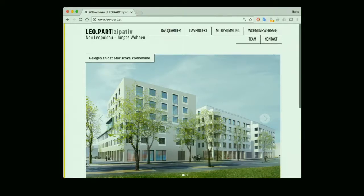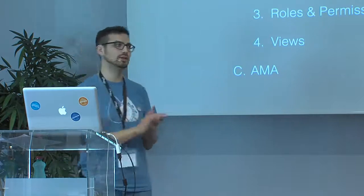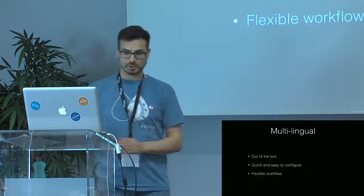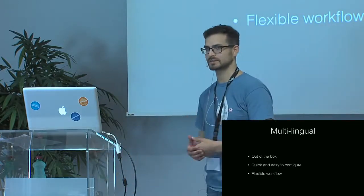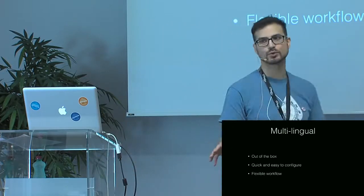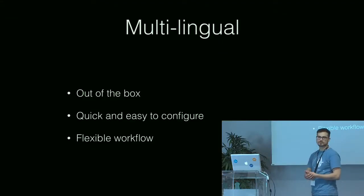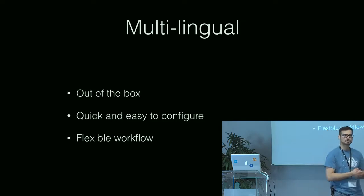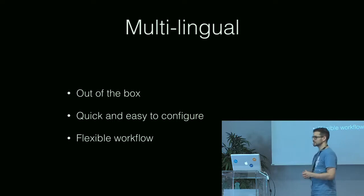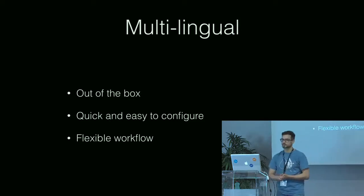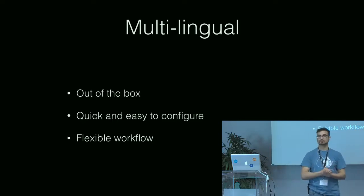So you've made a website like this, and your client comes around and says they're launching the website in three other countries and need to translate the content — that's where multilingual features come into play. In Drupal, multilingual functionality comes out of the box. Drupal 8 was released about a year ago; in earlier versions, translations worked but were not very straightforward. In the latest version, Drupal 8, it's an extremely streamlined and very easy process, and I'm going to show you some examples of that right now.